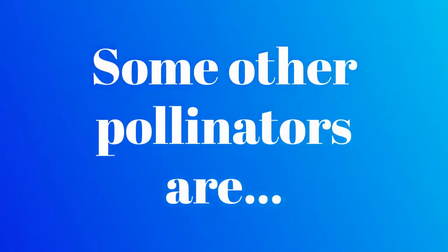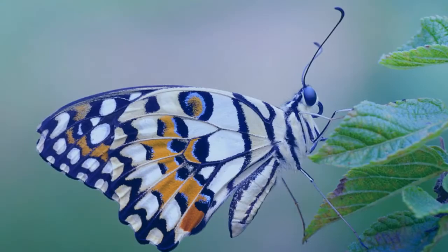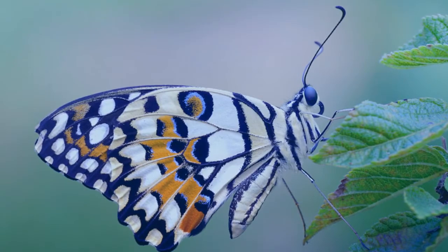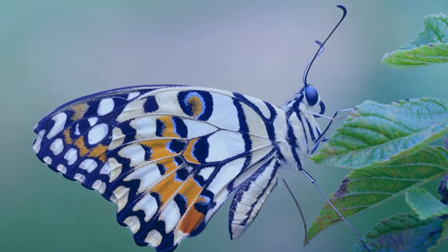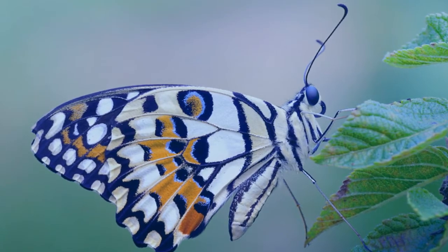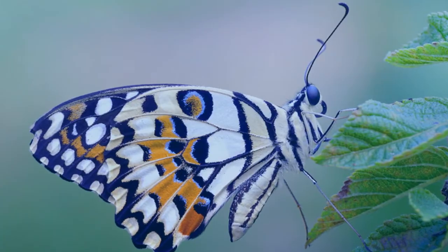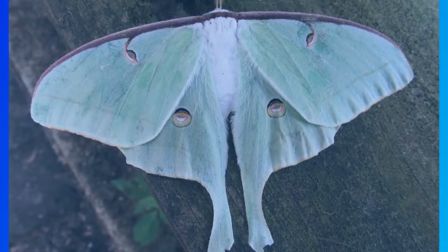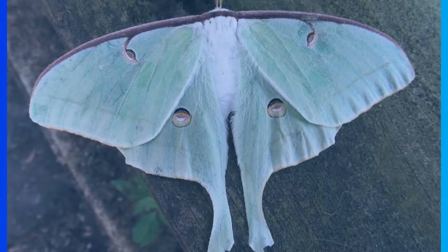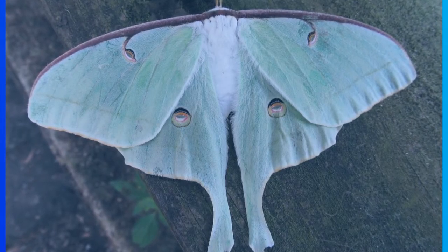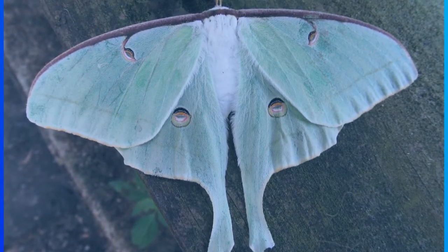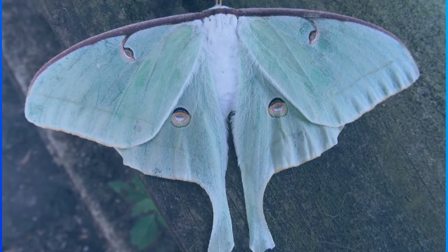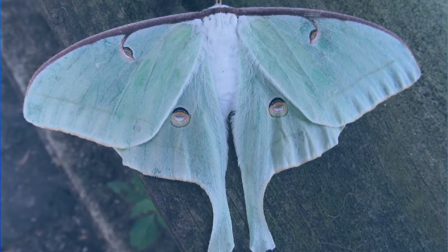Some other pollinators are butterflies, which are another pollinator. They pollinate deep in the plant. Moths also are pollinators. They get the nectar that is far in the flowers.